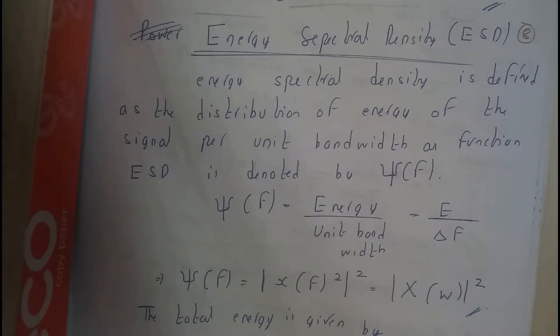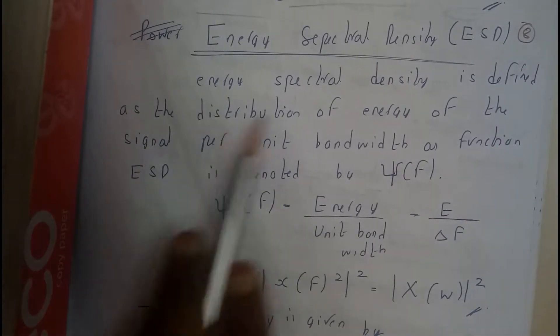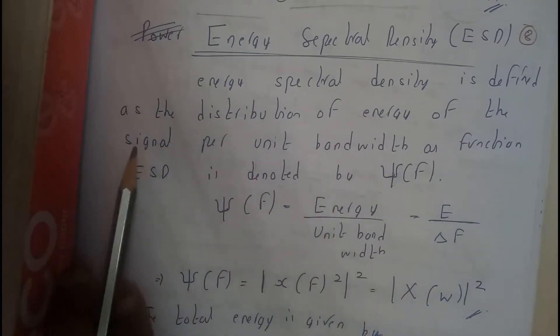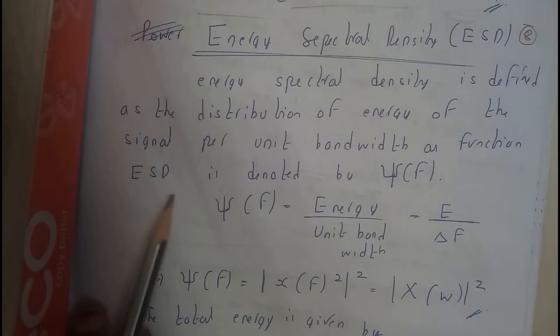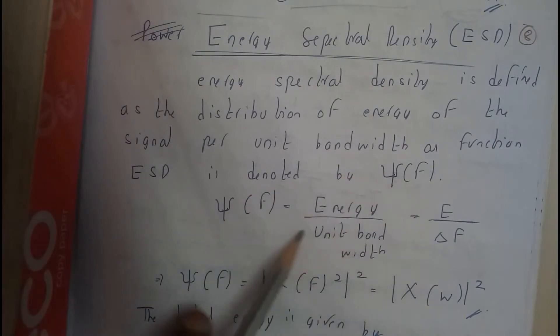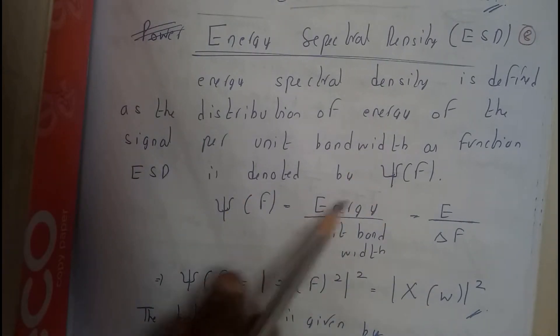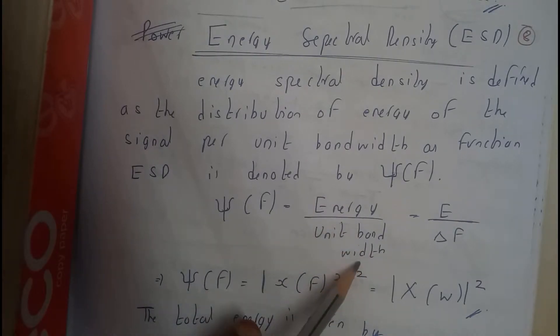So an ESD, energy spectral density, is defined as the distribution of energy of a signal per unit bandwidth as function. ESD is denoted by this symbol psi of F. So that is nothing but energy by unit bandwidth.